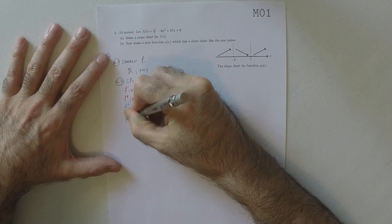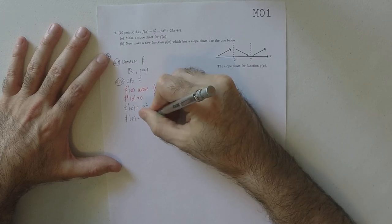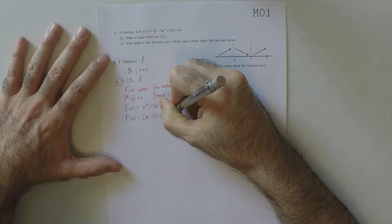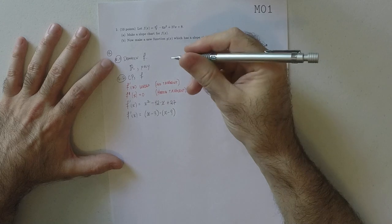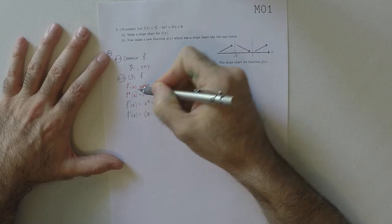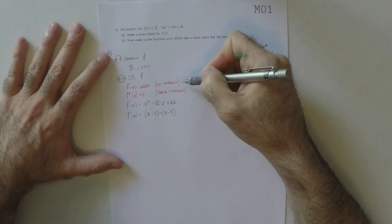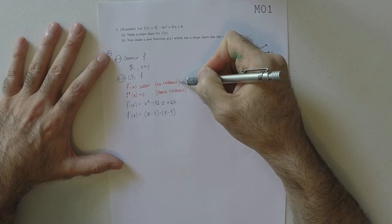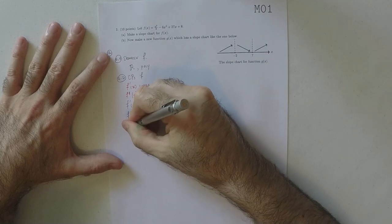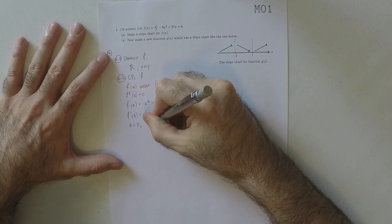Now, this derivative is a quadratic, and it factors as x minus 3 multiplied by x minus 9. And therefore, well, in the first place, because the derivative is a polynomial, that means that the derivative is defined everywhere, so there's no critical points of this variety. So that means that all the critical points are where the derivative is zero, and this factorization clearly shows that the derivative is zero exactly when x is 3 or x is 9.